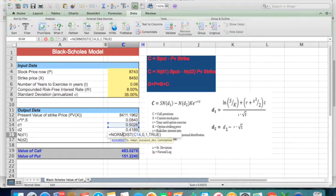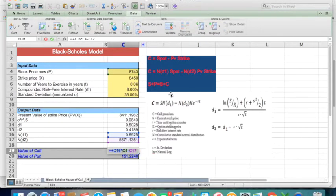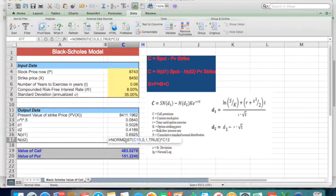Now using the formula in Excel, normdist of d1 and d2, then the value of call is calculated using the formula as per BSM model—that is, N(d1) multiplied with spot minus N(d2) multiplied with present value of strike price, which I have already done over here.